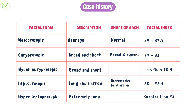Based on facial index value, the facial form is classified into mesoprosopic, euryprosopic, hypereuryprosopic, leptoprosopic and hyperleptoprosopic. If the value is between 84 to 87.9, facial form is mesoprosopic — average facial form and normal dental arch shape. If between 79 and 83, the patient is euryprosopic — broad and short facial form with broad and square dental arch. If less than 78.9, they are hypereuryprosopic with broad and short facial form. If between 88 and 92.9, they are leptoprosopic — long and narrow facial form with narrow apical basal arches. If the value is 93 or above, they are hyperleptoprosopic with extremely long facial form.